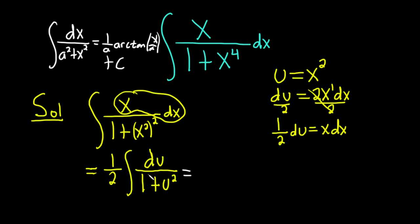So here it's going to be 1 half times 1 over 1 times arctan. Right, because a is 1. u over 1 plus c. So it's 1 over a, u over a. And a here is 1 because it's 1 squared.